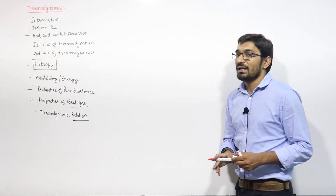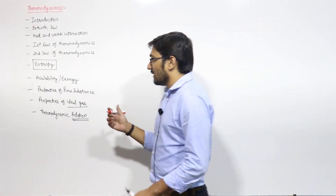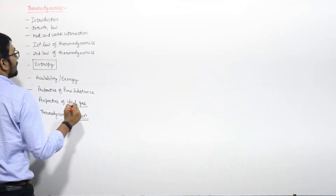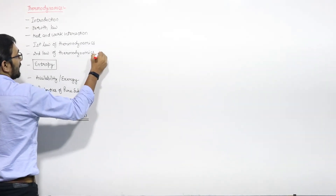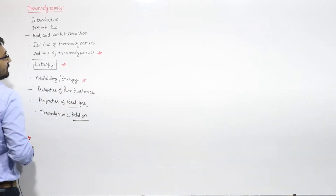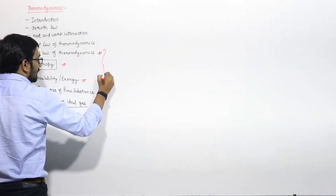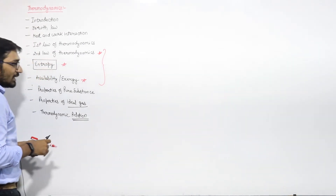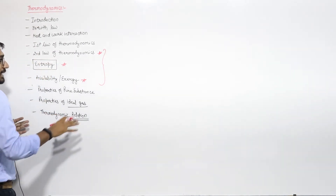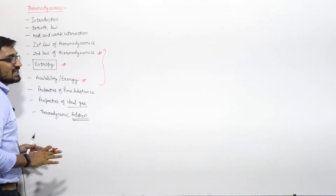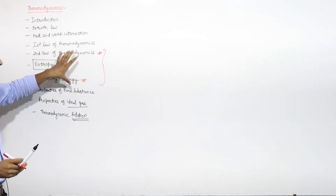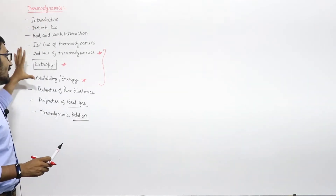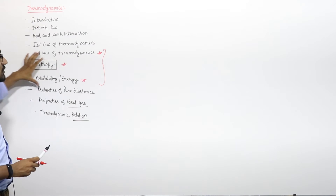If I mark the important chapters for the GATE point of view, then the second law of thermodynamics, entropy, and availability — these three topics I mark as most important for GATE. There is a high probability that questions will come from these three chapters, because in these three chapters you need all the concepts to be very clear before you can solve the numericals.